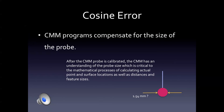CMM programs compensate for the size of the probe. For the purposes of this demonstration we will assume a round or spherical probe. After the CMM probe is calibrated, the CMM has an understanding of the probe size, which is critical to the mathematical processes of calculating actual point and surface locations, as well as distances and feature sizes.